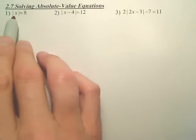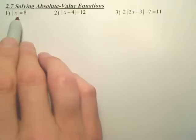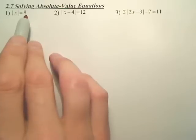The absolute value of what is 8? These little lines basically are saying make it positive. So what values give me 8? There's actually 2.